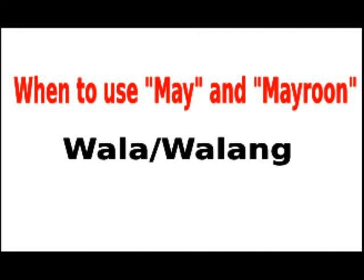Two. Wala, with the suffix ligature 'nang,' is used before numerals or adjectives, nouns, the article 'mga,' and verbs. Walang dalawang aso sa kulungan. — There are no two dogs in the cage. Walang tao sa labas. — There is no one outside. Walang mga tao sa labas. — There are no men outside. Walang natutulog na tao sa silid. — No one is sleeping in the room.